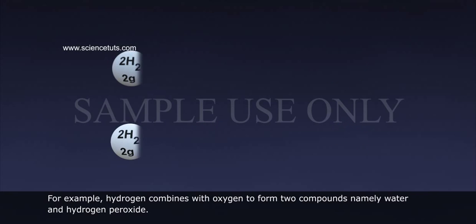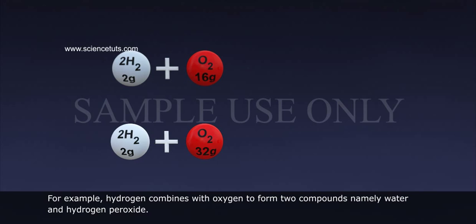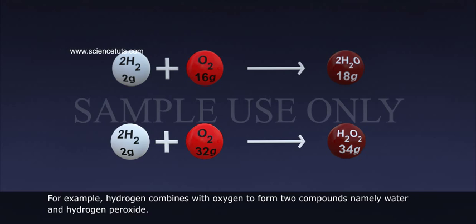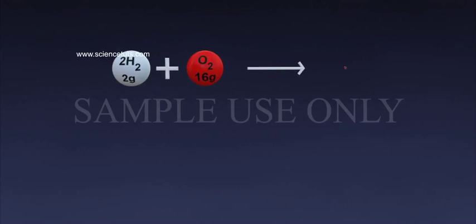For example, hydrogen combines with oxygen to form two compounds, namely water and hydrogen peroxide. Hydrogen, 2 grams, plus oxygen, 16 grams, gives water, 18 grams.